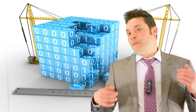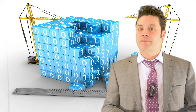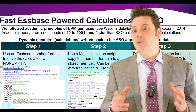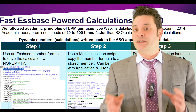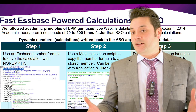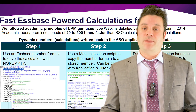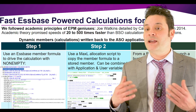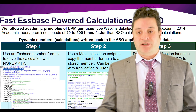Welcome back. Before we get into the topics I would like to cover for Kscope 18, I want to briefly cover a few underlying principles to ASO calculations. In 2014, Joe Watkins came up with an ingenious approach for performing ASO calculations that was detailed by Cameron Lackpour at Kscope 14. Academic theory theorized ASO calculation speeds of possibly 20 to 500 times faster than BSO. This is performed by utilizing a dynamic member and writing the results back to an ASO application as input data, and it really involves three steps.